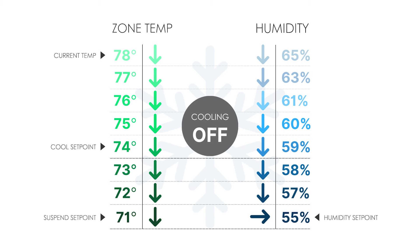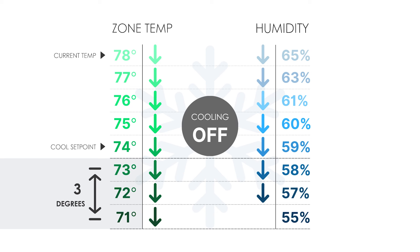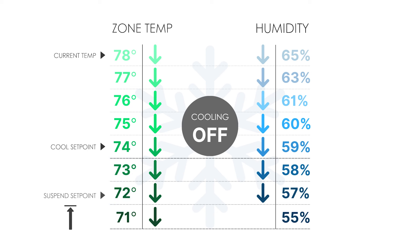By default, the cooling will be suspended if the zone temperature gets 3 degrees below the cooling set point and the zone still requires dehumidification. However, this suspend offset can be changed in the programming.